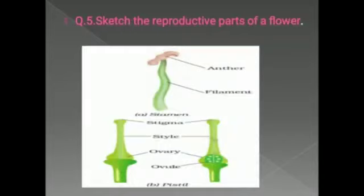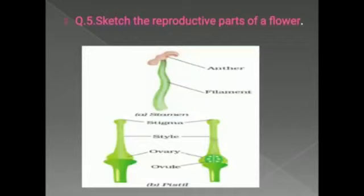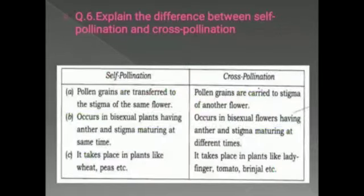Question number 5: sketch the reproductive parts of a flower. The reproductive parts of a flower are stamen and pistil. Stamen is the male reproductive part and pistil is the female reproductive part. For stamen, label the filament and anther. For pistil, label the stigma, style, ovary and ovule.